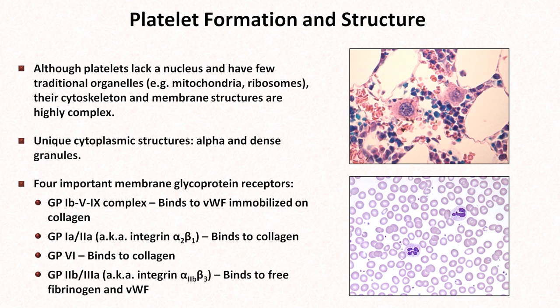The GP system stands for glycoprotein, and designates numbers and letters to proteins according to their electrophoretic mobility on polyacrylamide gels. The integrin nomenclature is based on the protein structure. Unfortunately, neither of these are remotely helpful in understanding or remembering their functions.